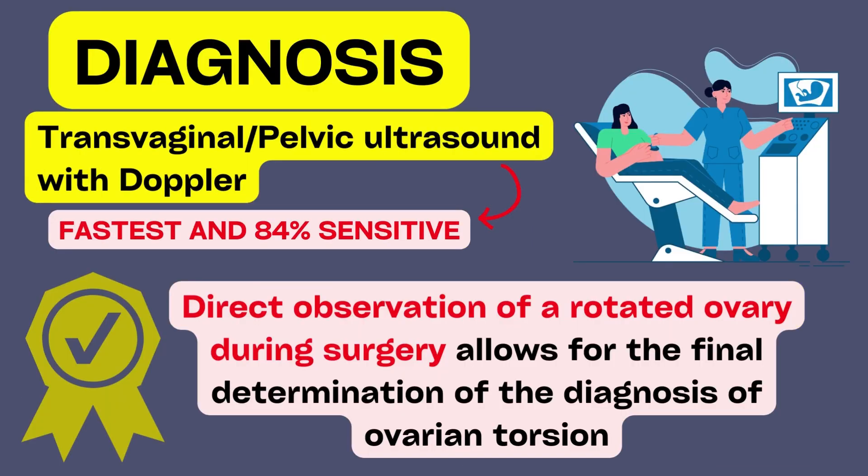In practical terms, we must remember that time is very precious in cases of ovarian torsion. Keeping that in mind, the best and quickest way of diagnosing a torsion is by performing a Doppler ultrasound. It is necessary to perform both a transvaginal and pelvic ultrasound. Depending on a variety of criteria, such as the technician's ability and the patient's anatomy, ultrasound has a reported sensitivity of about 84% for ovarian torsion.